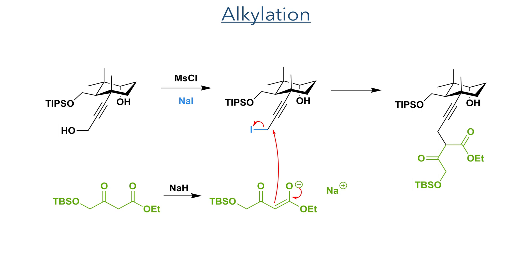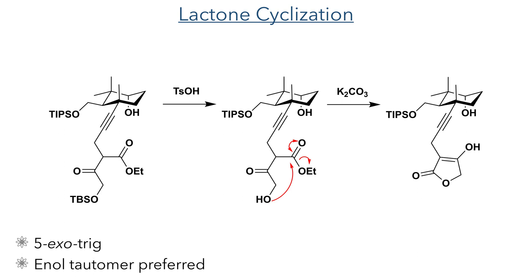This was then reacted with the enolate of a TBS-protected beta-keto ester. This was not a stereoselective reaction; however, it does not matter as the stereochemistry of the newly formed tertiary carbon centre would be lost upon further reaction. This next reaction came in the form of a lactone cyclisation. Selective deprotection of the TBS group using tosic acid generated a primary alcohol, which then underwent an intramolecular trans-esterification reaction with the ethyl ester. This is a 5-exo-trig reaction, highly favoured by Baldwin's rules, and produced a 5-membered ketolactone.